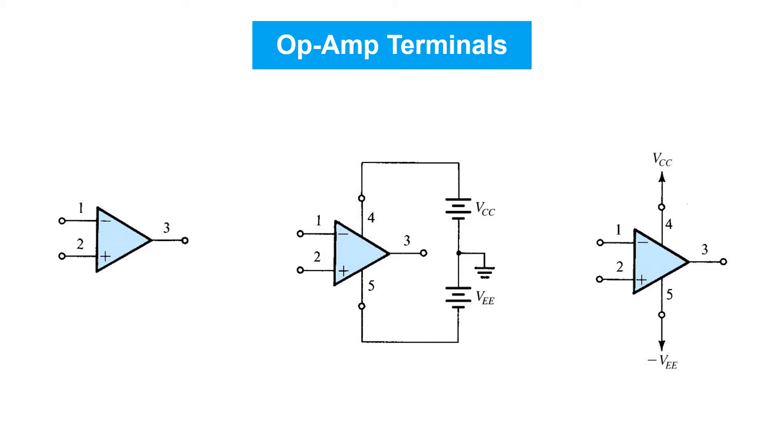An op amp is an amplifier with three main terminals. There's the two inputs: the inverting input and the non-inverting input on the left.